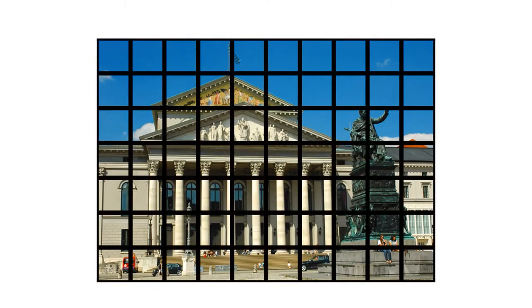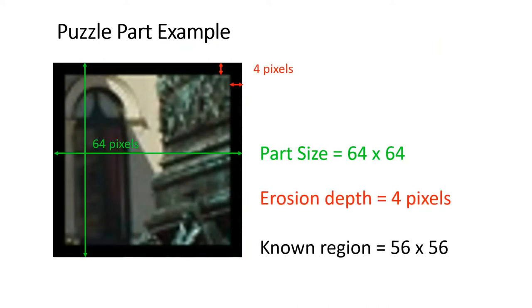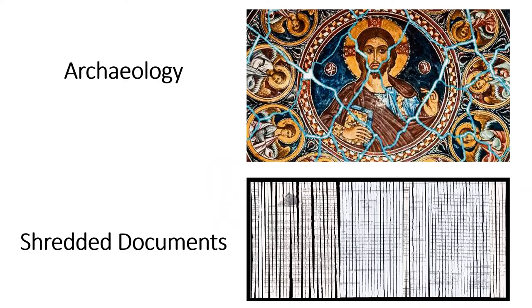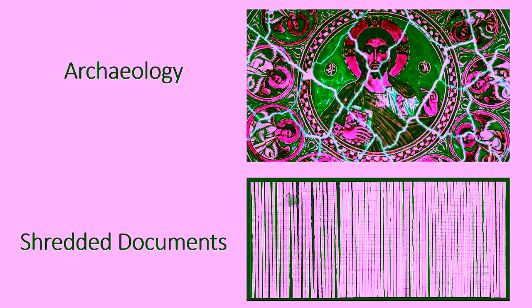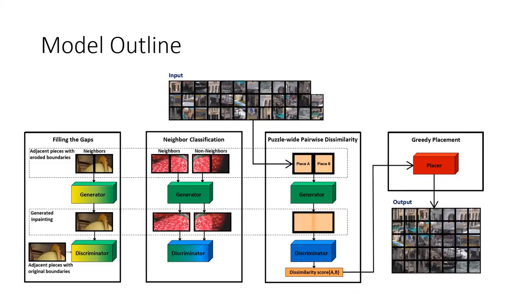Such erosion makes the problem extremely difficult, since most existing solvers utilize solely the information at the boundaries. Nevertheless, this variant is important since erosion and missing data often occur at the boundaries.